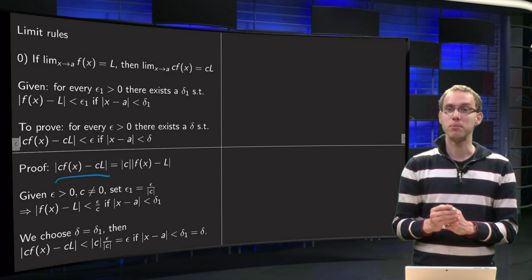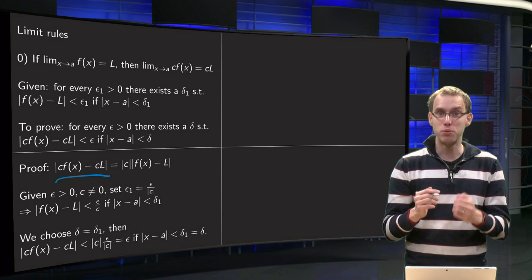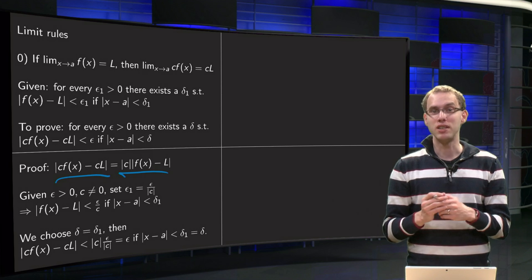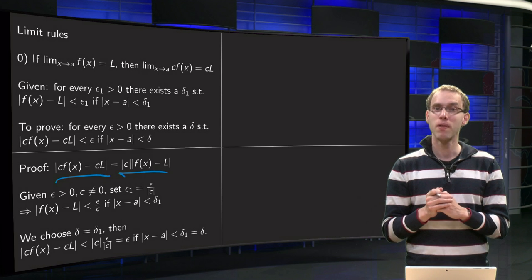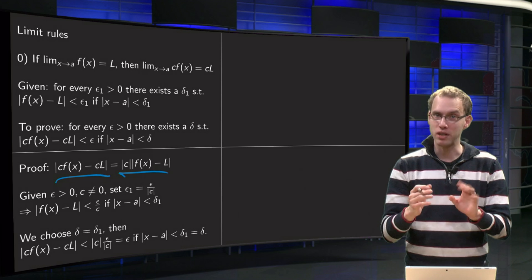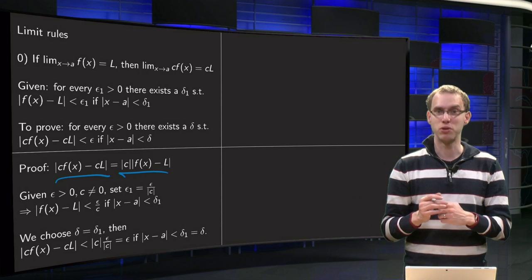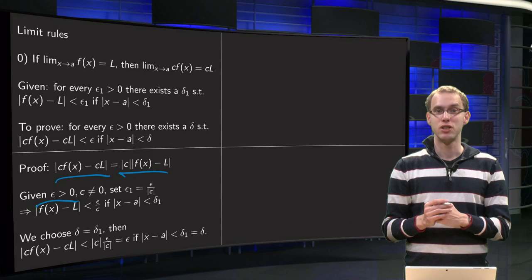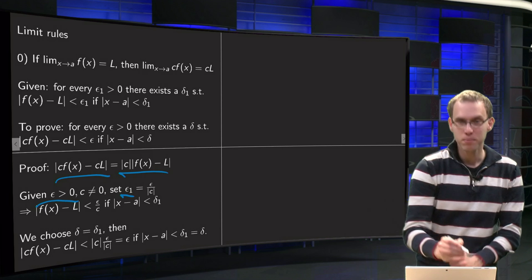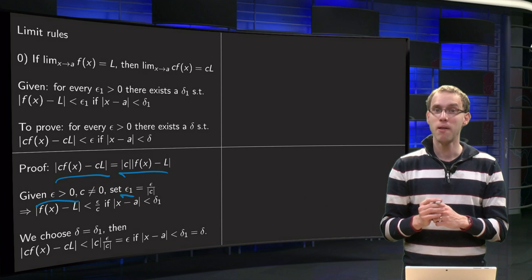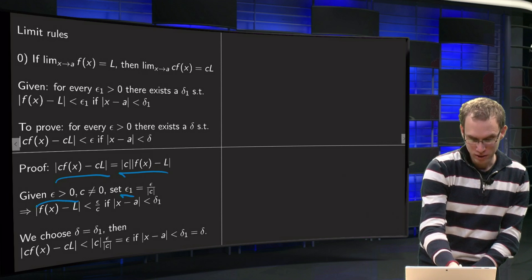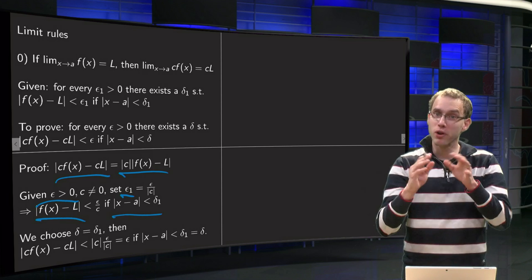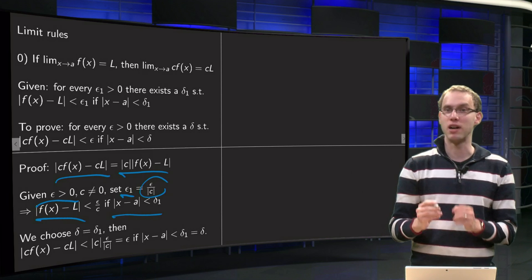We know that |c·f − c·L|; we want to show that we can get this very small. Well, we can take the c out, so put the absolute value of c in front. This is trivial for c = 0, because then c·f will be everywhere 0 and the limit will be 0, so that is fine. Now we consider what happens if c is not equal to 0. Given any ε > 0 with c ≠ 0, I define ε₁ = ε / |c|. Then I know, because I am given, that I can find a δ₁ such that if |x − a| < δ₁, then |f(x) − L| < ε₁, which I have chosen to be ε / |c|.